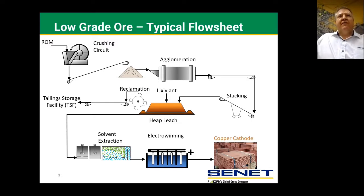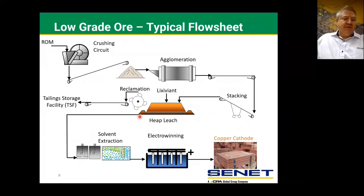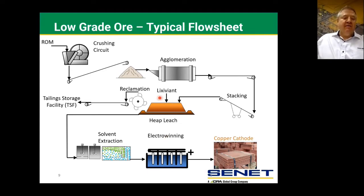The low-grade ore flow sheets for sulfides, oxide, and mixed ore are very similar. The ore is crushed in the crushing circuit and then agglomerated. Quite often lixiviant is added, however it's not usually necessary to add any binding agent. The ore is then stacked onto a heap and further lixiviant — which is mainly raffinate from the solvent extraction — is put onto the heap. The copper is dissolved and sent to solvent extraction, where the copper is removed from the leach solution and transferred to the electrolyte and sent for electrowinning, which produces a copper cathode. The leftovers, or ripios, are reclaimed and then sent to the tailings storage facility.